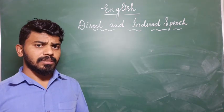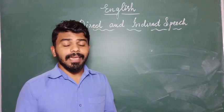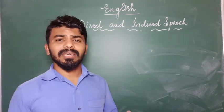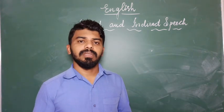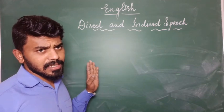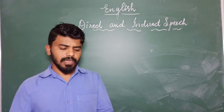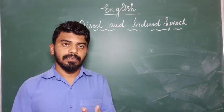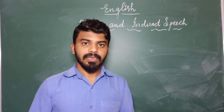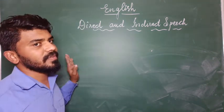We are done with assertive and interrogative sentences. We have two more: imperative sentences and exclamatory sentences. An imperative sentence is nothing but an order, request, or command. The words we use are: ordered, commanded, threatened, demanded, requested, pleaded. I will give a simple example. Here is the sentence: Inspector said to police, 'Shoot the criminal.'